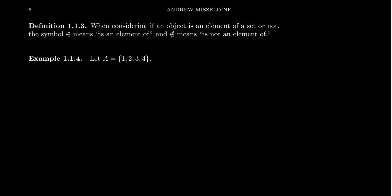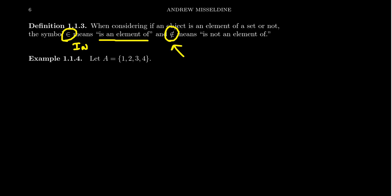Since membership is king when it comes to sets, let's introduce notation to talk about set membership. When considering if an object is an element of a set, we use a symbol that looks like an E or the Greek letter epsilon — this means 'in.' This symbol means an element is in the set. If you see that symbol with a slash through it, the object is not an element of the set. In mathematics, putting a slash through a relation symbol negates it — like 1 + 3 equals 4, but 1 + 3 does not equal 5.